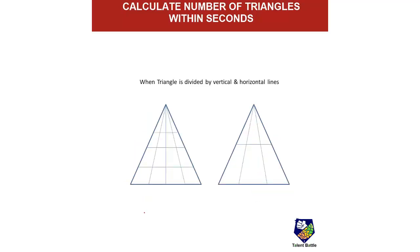When a triangle is divided by both vertical and horizontal lines, initially ignore the horizontal lines, number the vertical triangles and add them up — which gives 6. Then multiply by the number of horizontal lines: there are 2 horizontal lines, so 6 × 2 = 12. Total triangles are 12.